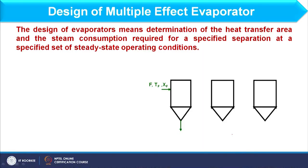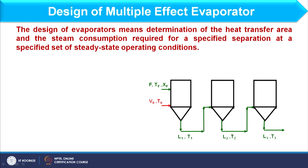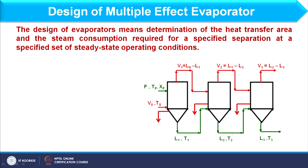As far as triple effect evaporator is concerned, this is the schematic where feed is entering into the first effect and concentrated liquor is entering from first to second effect and then to third effect, and finally we have concentrated product from third effect. Similarly, steam is entering into the first effect and vapor generated in the first effect enters as heating media in the second effect, and so on from second to third effect and from third effect to condenser, with the whole assembly connected to a vacuum pump.